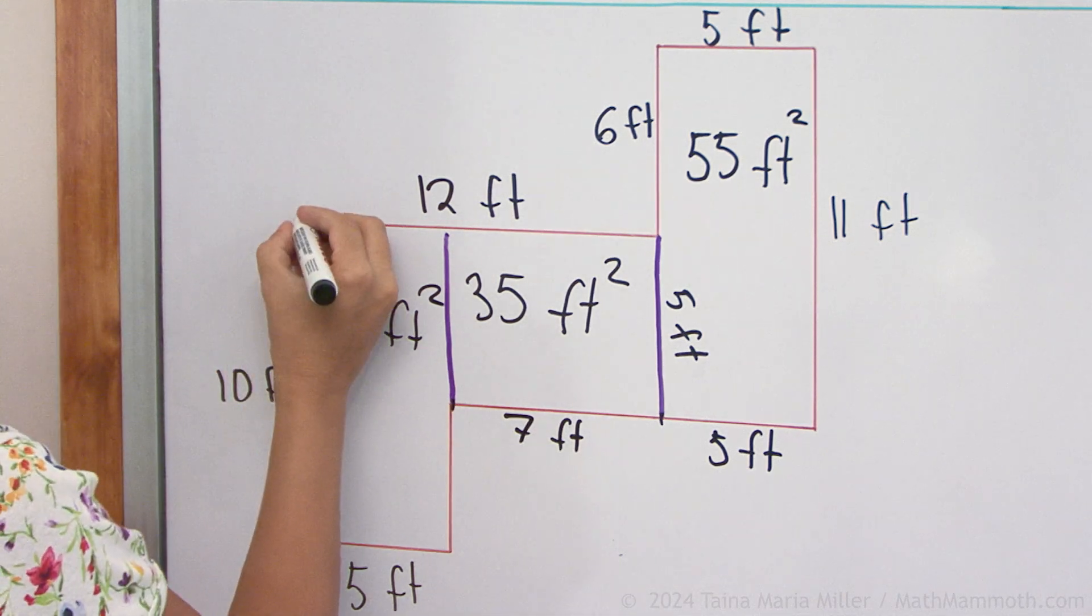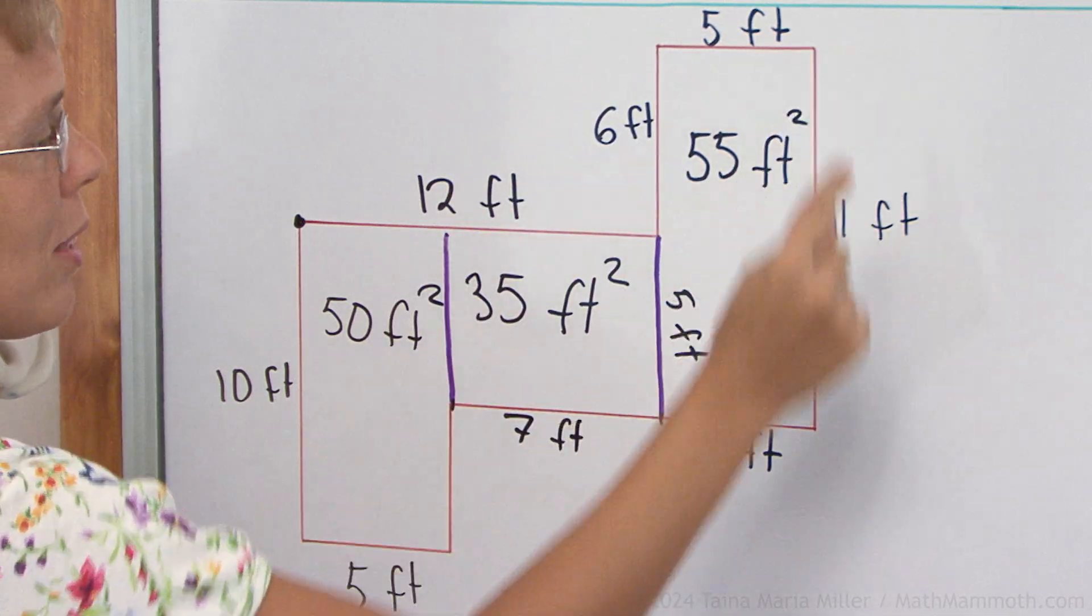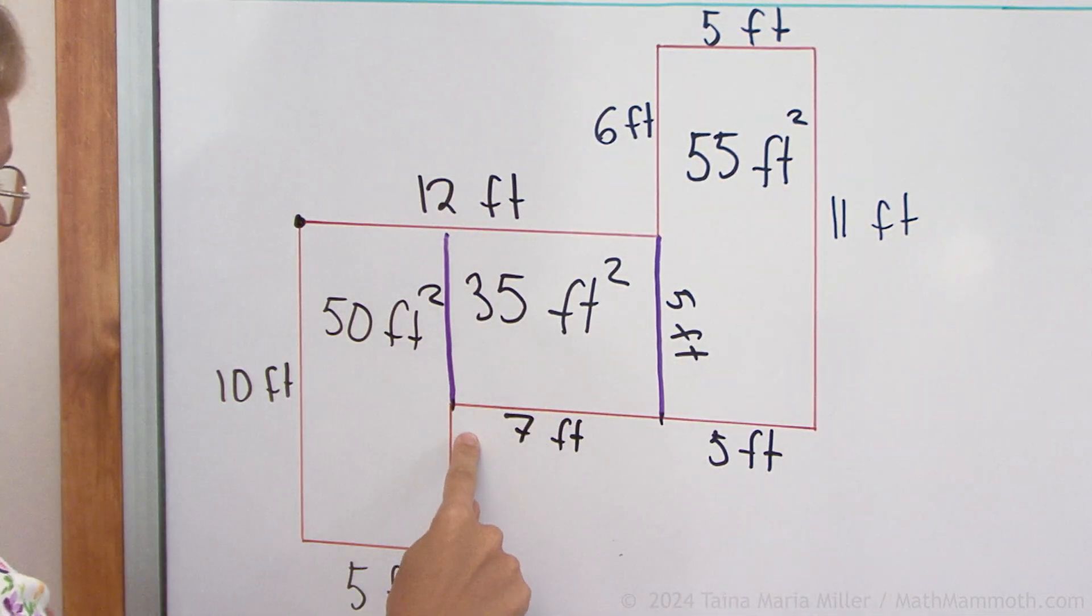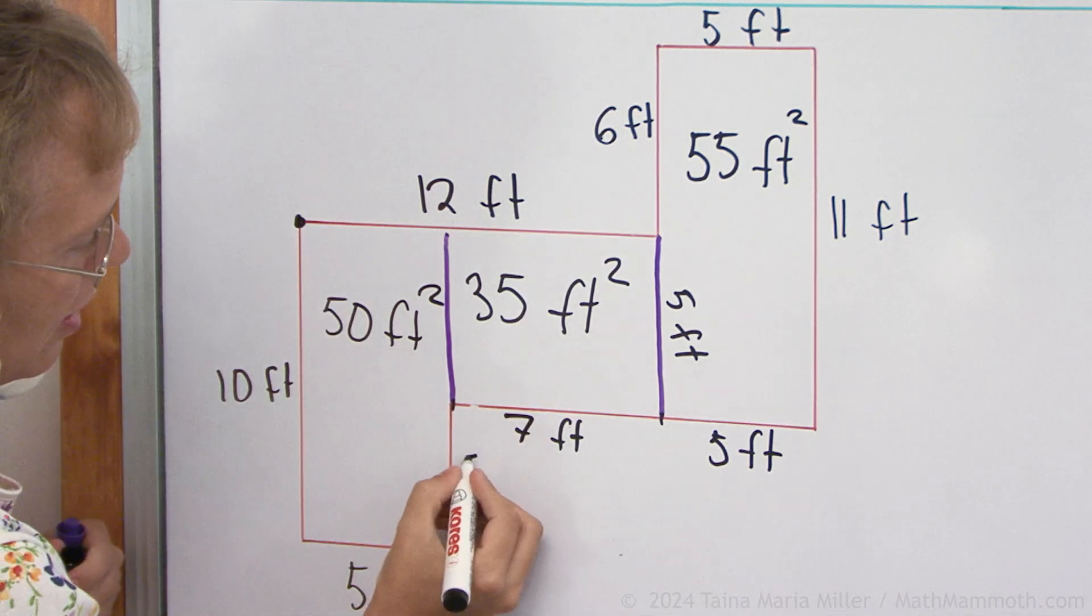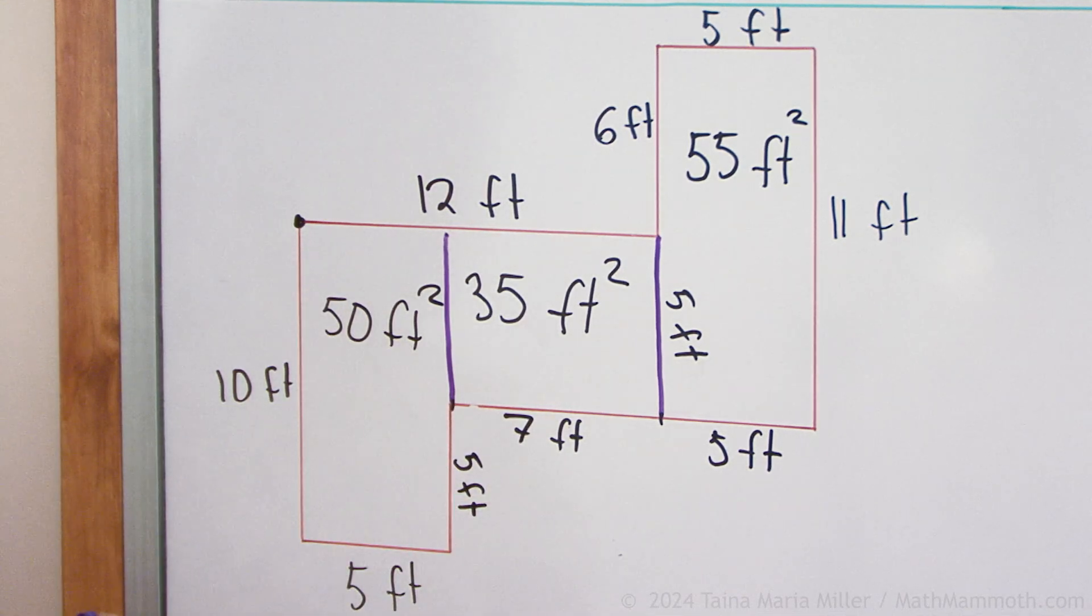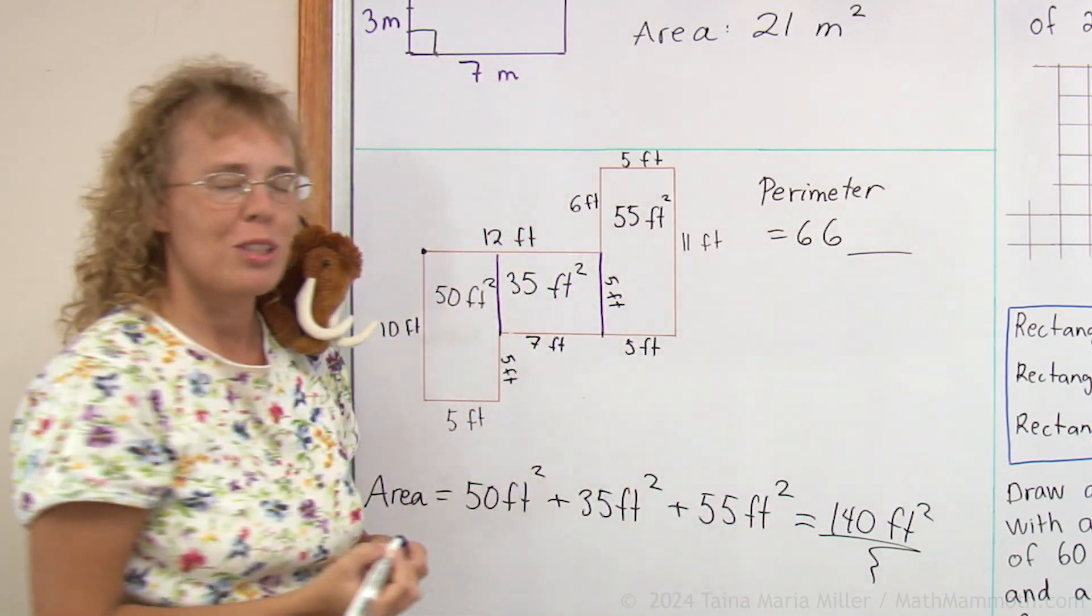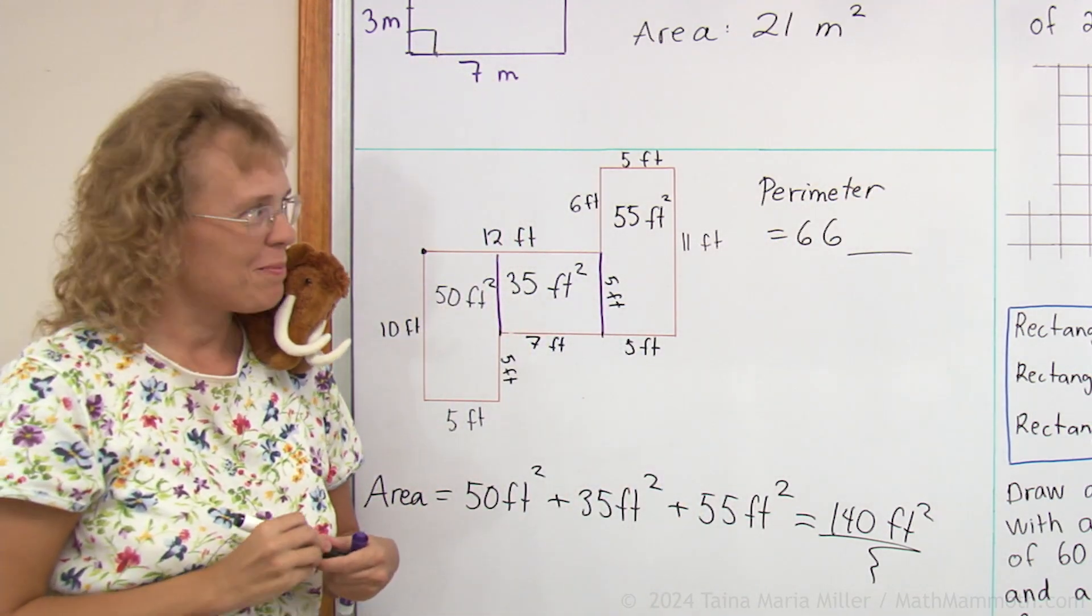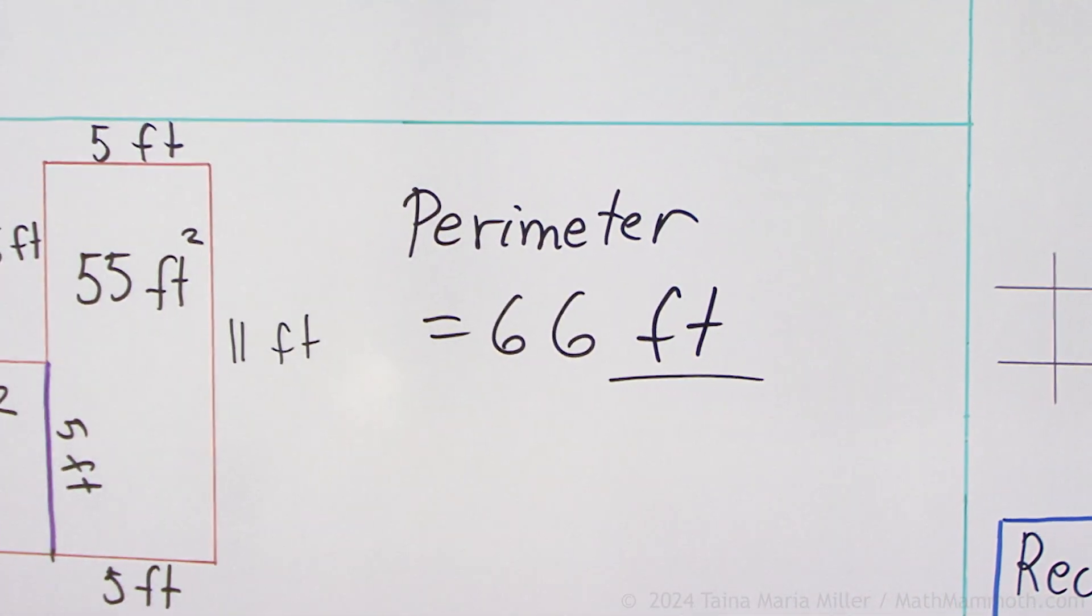Let's see if I start at this corner. 12 and 6 is 18, 23, 34, 46. Oh this is still missing. Here we had 5 feet and 10 feet, so that is 5 feet too. So 46, 56, 66. What unit will we put for the perimeter? 66 what? It is feet because we were adding all these feet, so it is a unit of length, 66 feet.